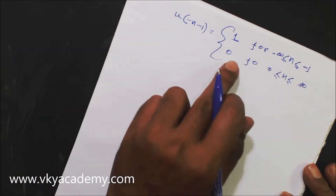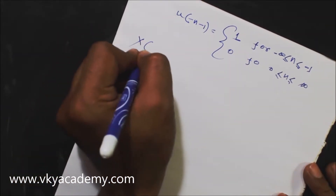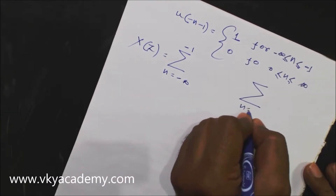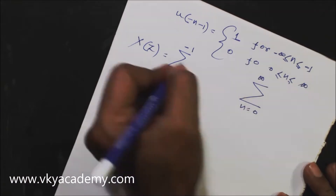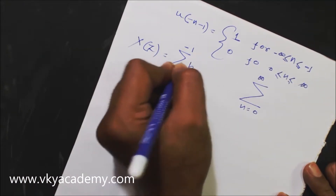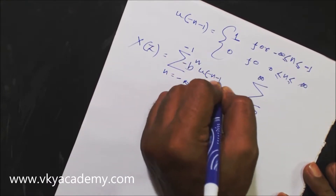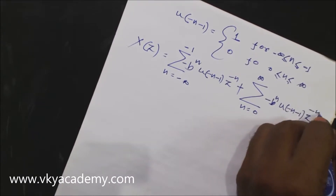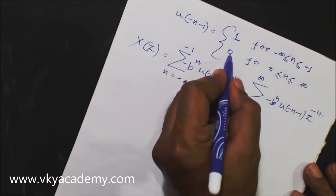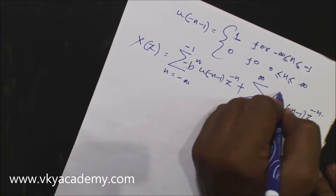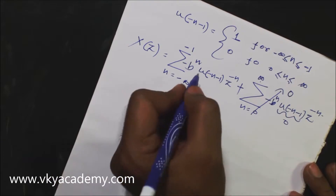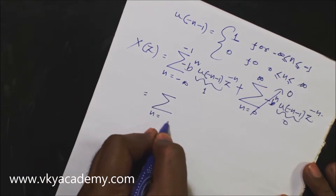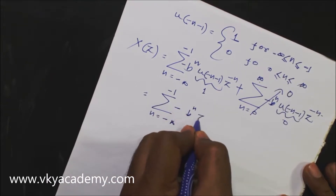Putting the value of u(-n-1) into the formula, we have X(z) = summation from n = -∞ to -1 of [-b^n u(-n-1) z^(-n)] plus summation from n = 0 to ∞ of [-b^n u(-n-1) z^(-n)]. Between 0 to ∞, u(-n-1) = 0, so the second term reduces to 0. Between -∞ to -1, u(-n-1) = 1. So the function reduces to: summation from n = -∞ to -1 of -b^n z^(-n).